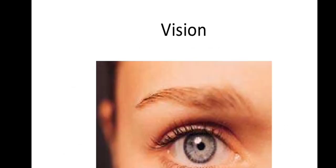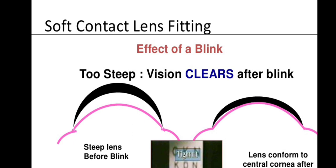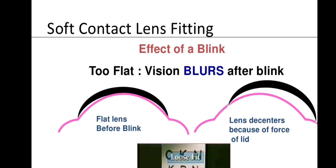After fitting, ask the patient about pre- and post-blink vision. If vision clears after a blink, the lens is too steep (tight fit). If vision blurs after a blink, the lens is too flat. The ideal lens produces the same vision pre- and post-blink — no blurring and no sudden clarity.